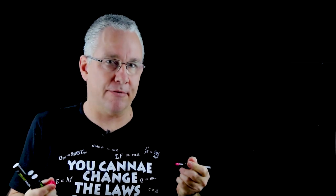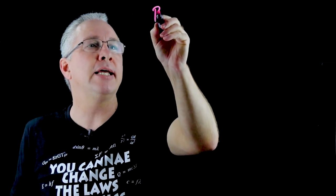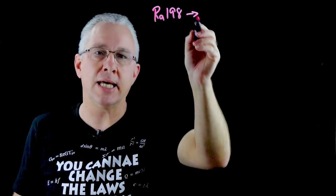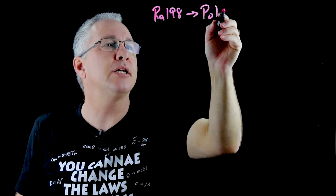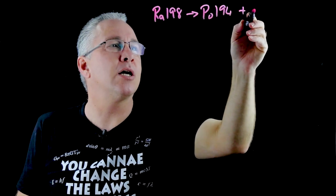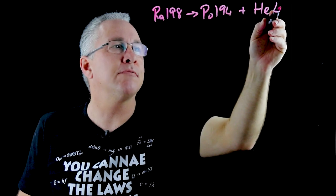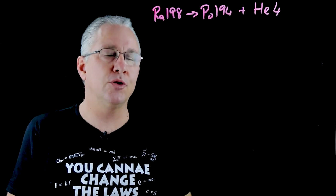So let's have a look at an example of a nuclear reaction where we can see the use of atomic mass units is going to be very useful. So let's look at alpha decay and I'm going to be looking at radium 198 and it's going to decay into polonium 194 with the release of an alpha particle which is often referred to as the helium nucleus.